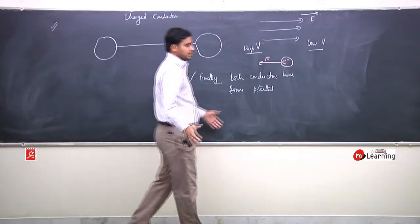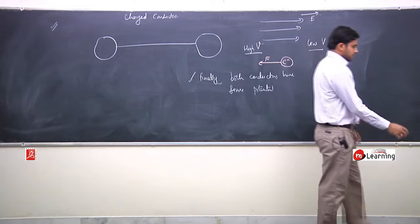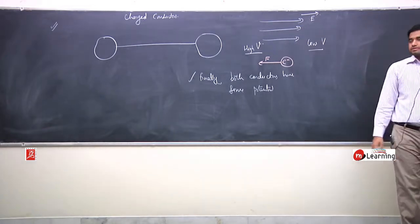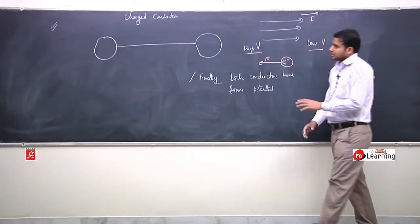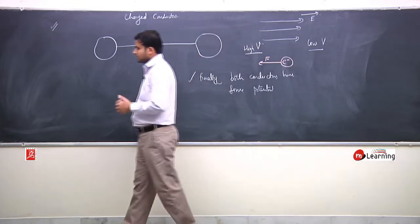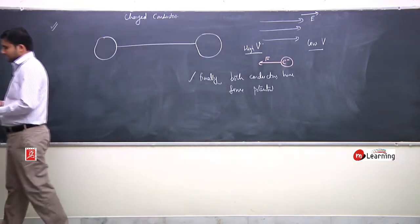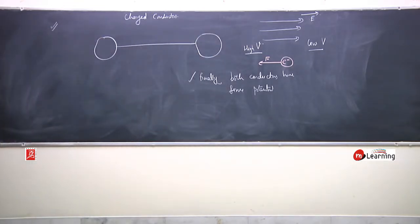When two charged conductors are connected through conducting wire, there is sharing of charge and finally both the conductors have same potential.